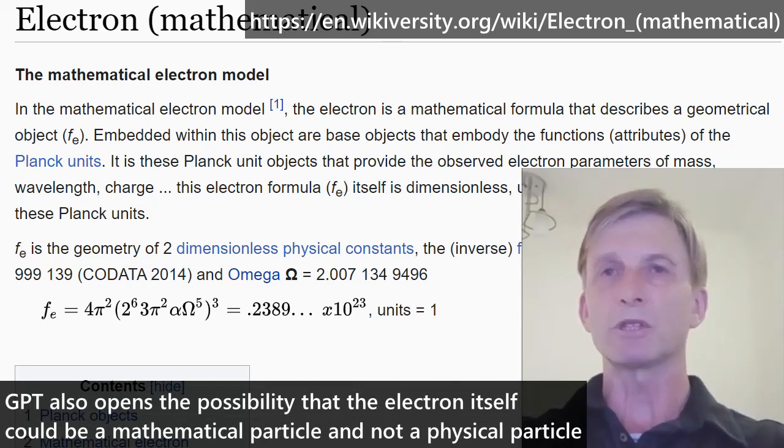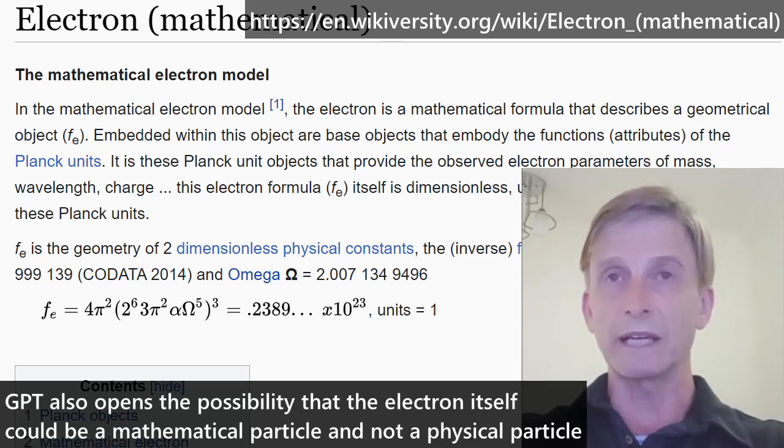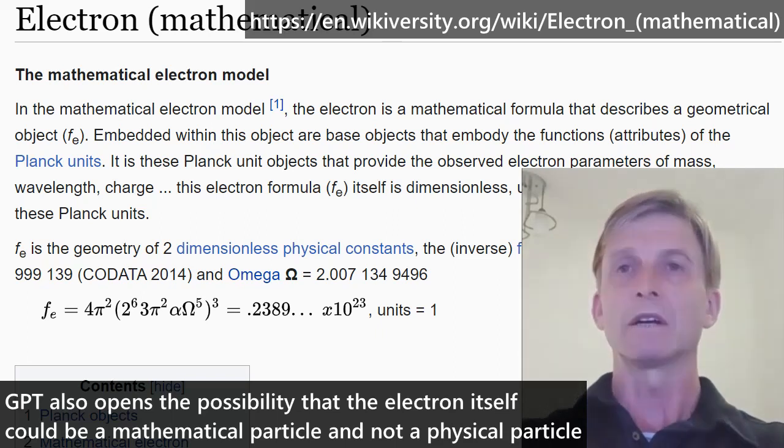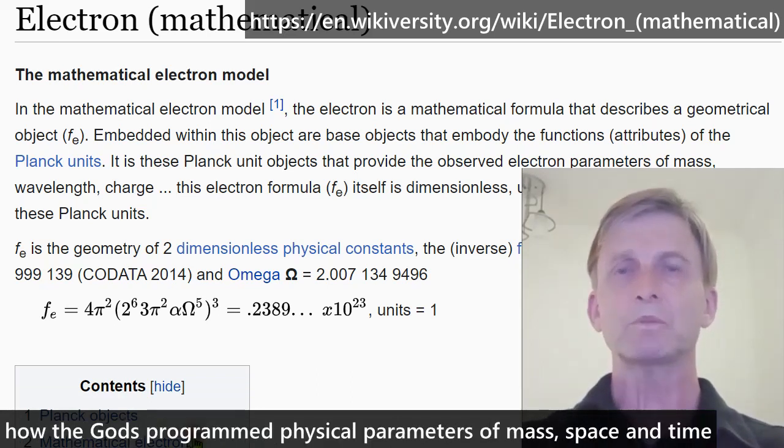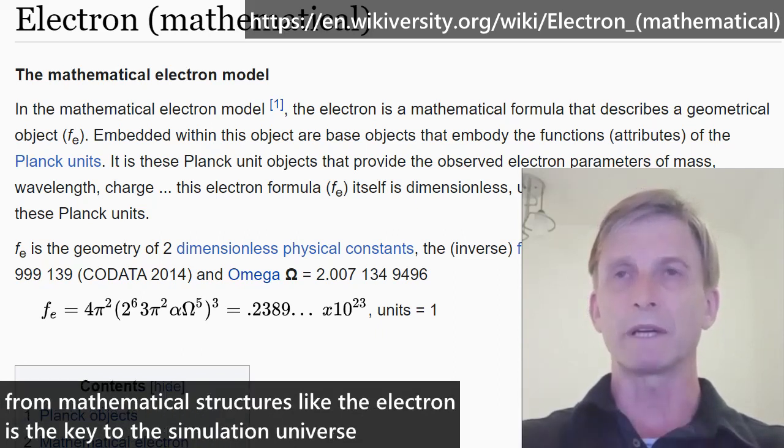GPT also opens the possibility that the electron itself could be a mathematical particle, not a physical particle, although its parameters, its mass, wavelength and charge are physical. How the gods programmed physical parameters of mass, space and time from mathematical structures like the electron is the key to the simulation universe.